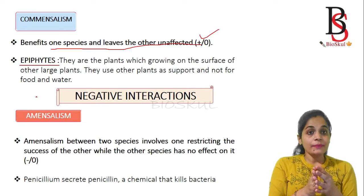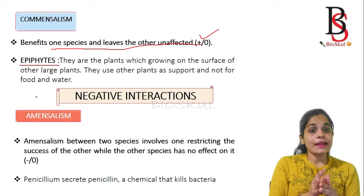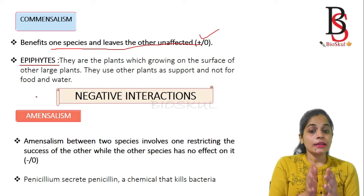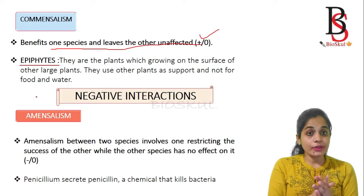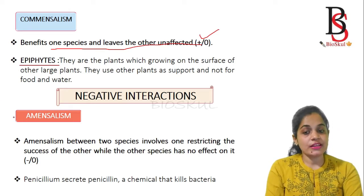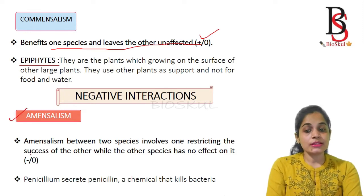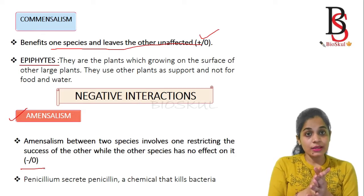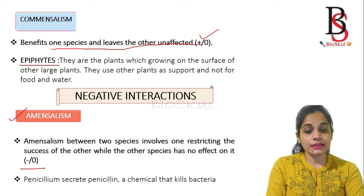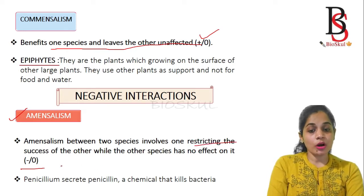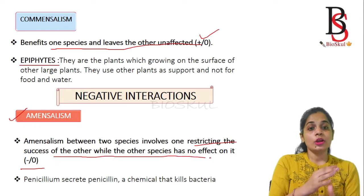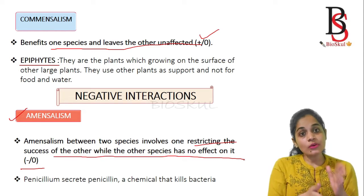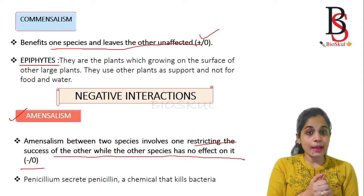Now we come to negative interactions. Negative interaction is the type of interaction where one species gets benefit by harming or without harming the other species. The first type of negative interaction is amensalism, represented by minus-zero, meaning one individual restricts the success of the other while the other species has no effect on it — one species is harmed without harming the other.